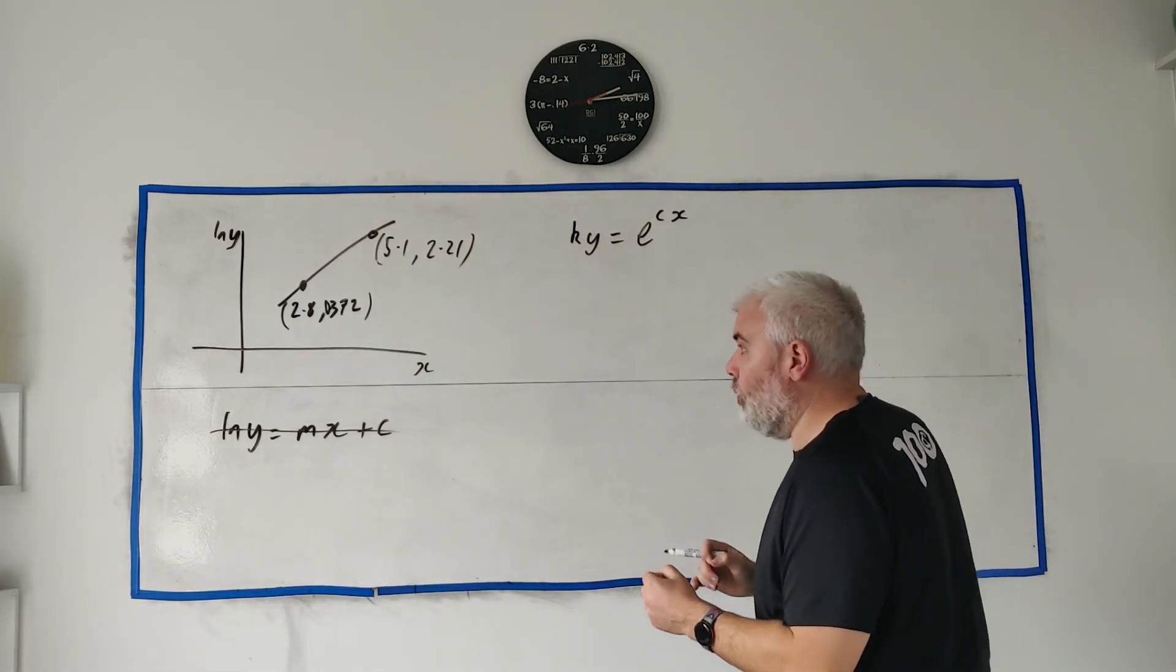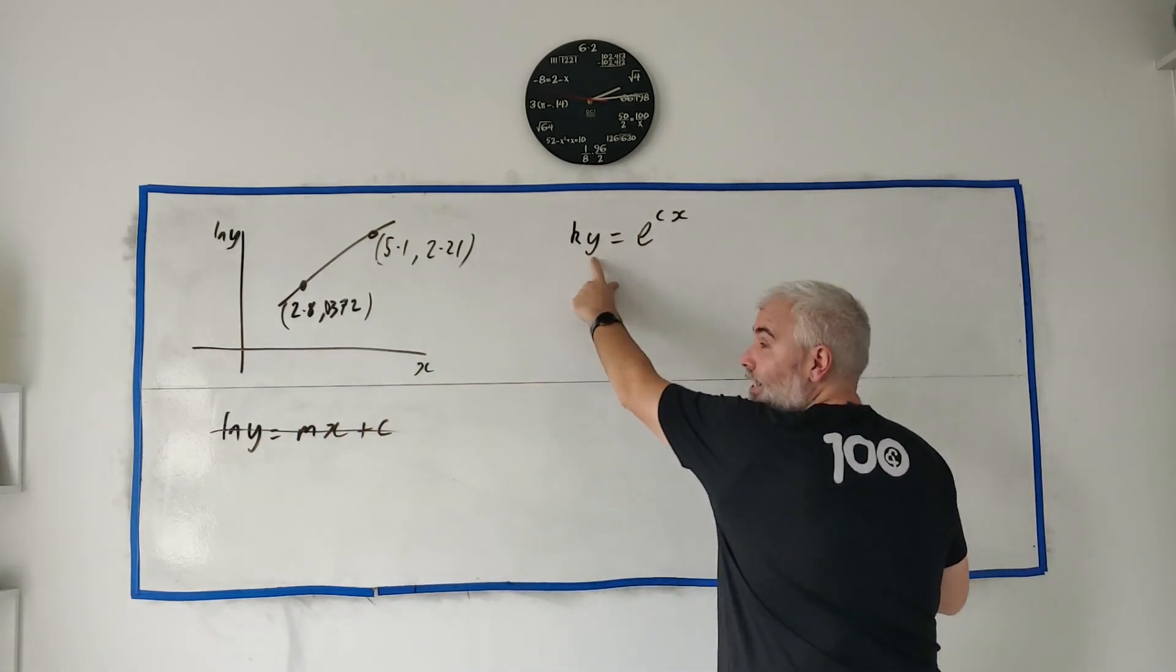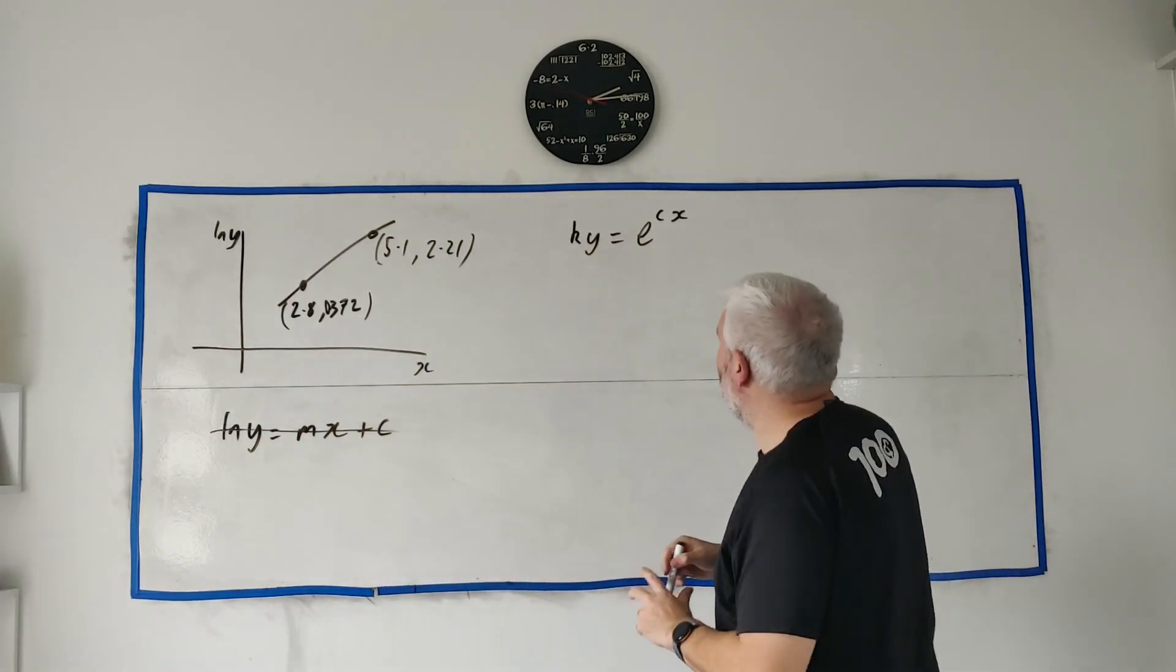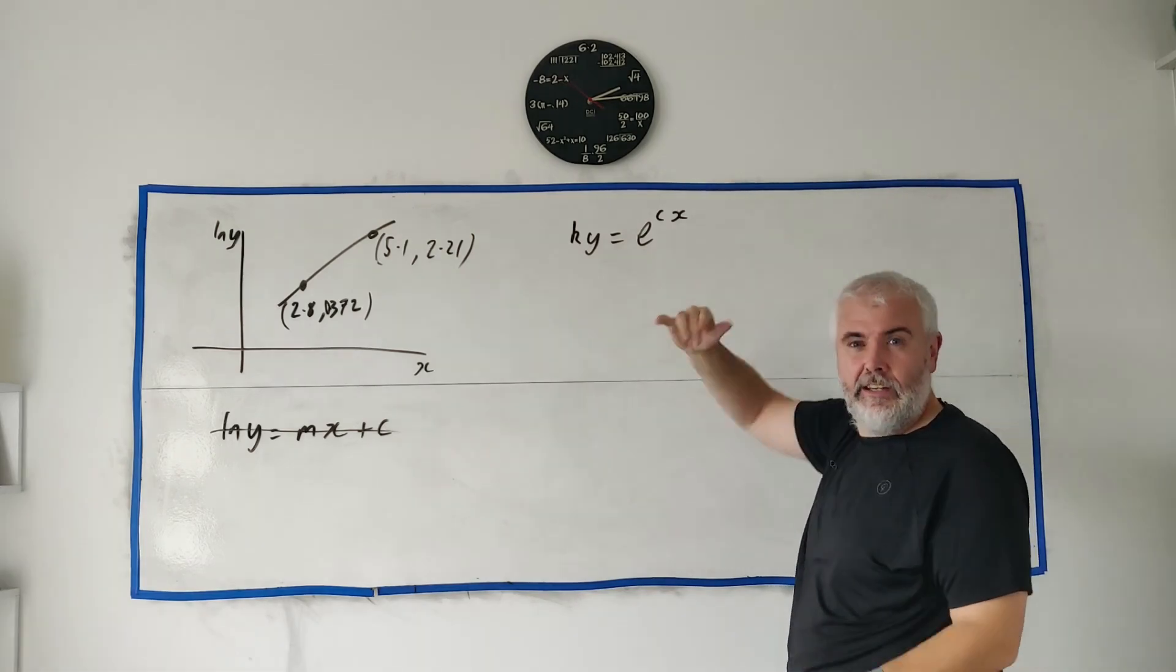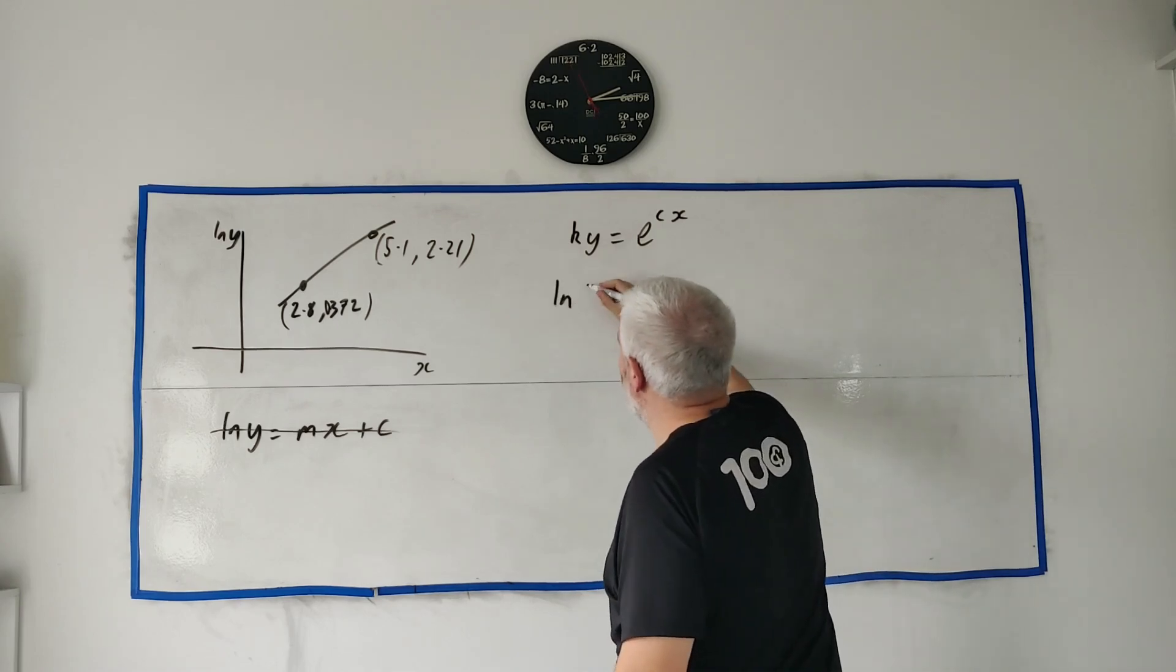There should be a couple of clues. One, we know we want to get natural log y somewhere, so let's get the natural log of y. Another clue would be the natural log destroys this e, so you should be thinking natural log up here. Let's take the natural log of both sides.